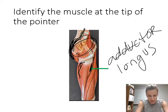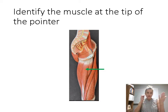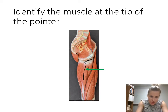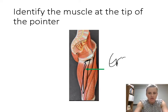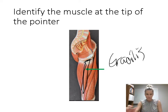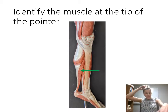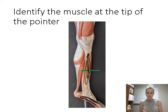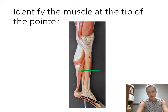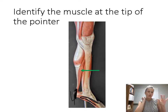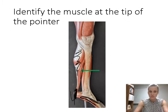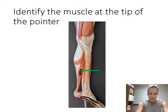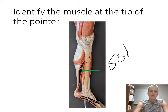Still in the inner thigh — we did adductor longus last time. Now moving in a little, this superficial muscle is called gracilis. Down at the lower leg again, looking at the back of the leg where the heel is — there were two large muscles back there. This question is pointing to the one underneath the superficial muscle. That is the soleus.